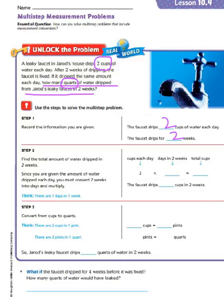Now, let's look at step two. It says to find the total amount of water dripped in two weeks. Since you are given the amount of water dripped each day, which was the two cups, you must convert two weeks into days and multiply.